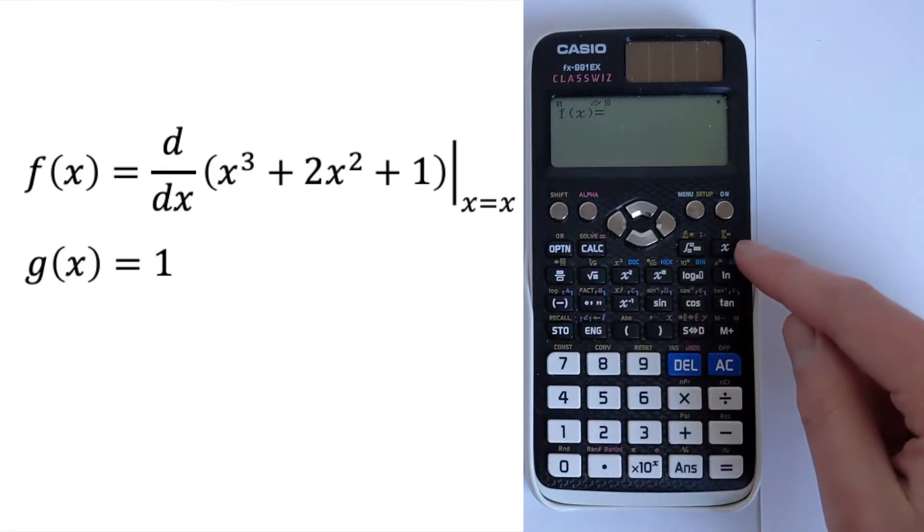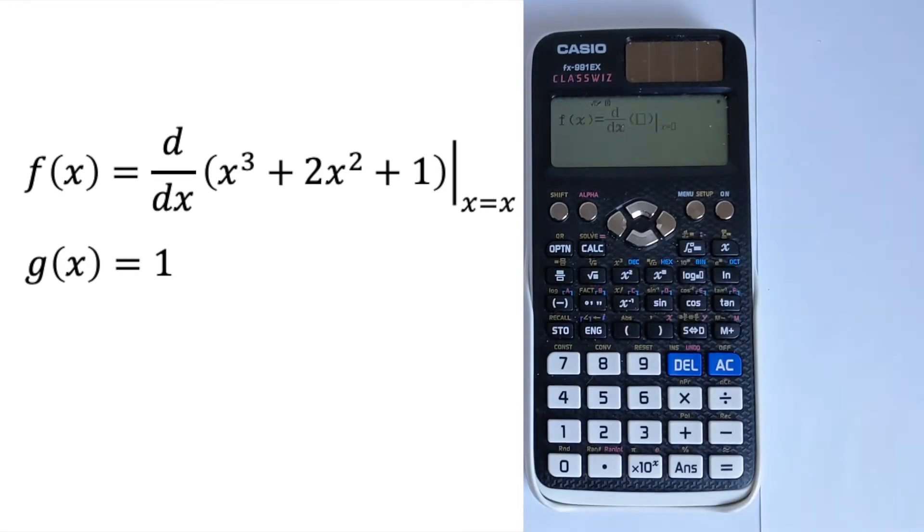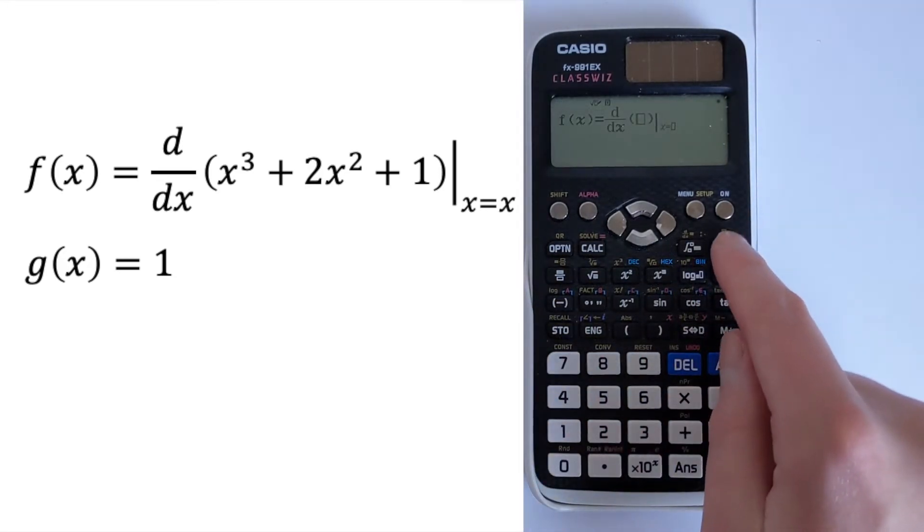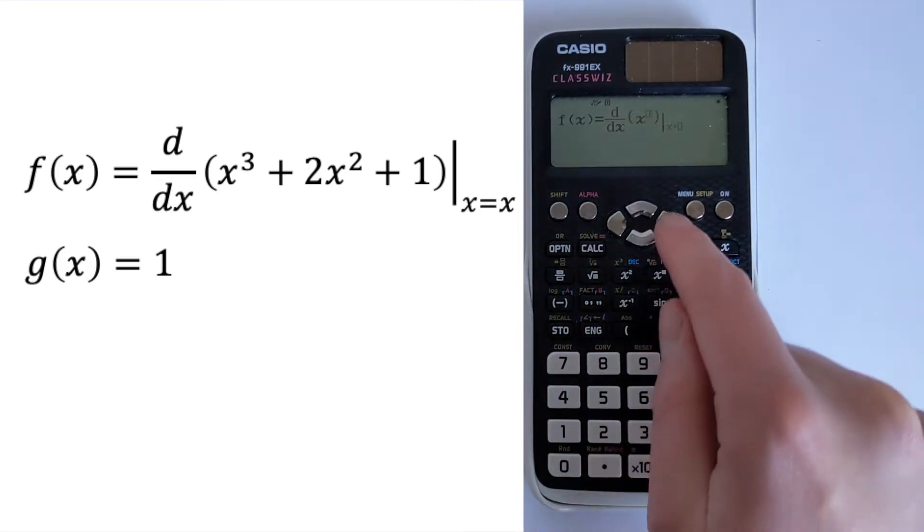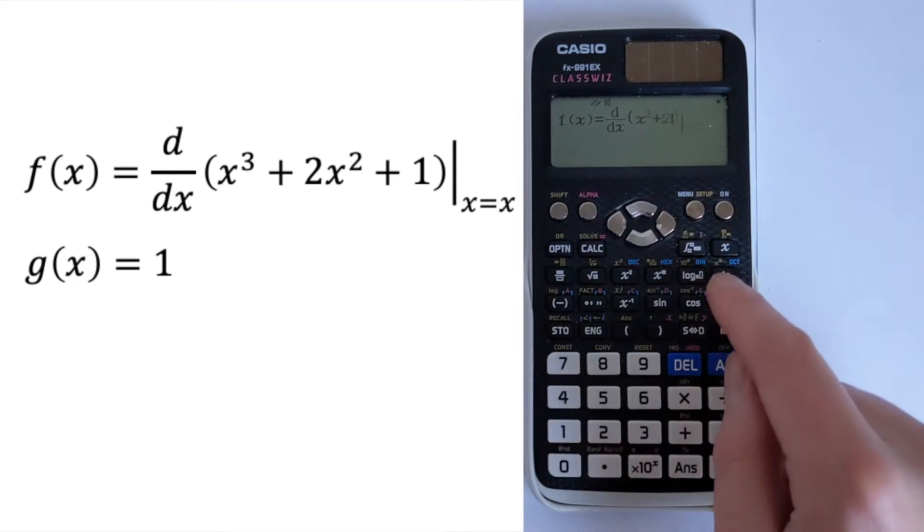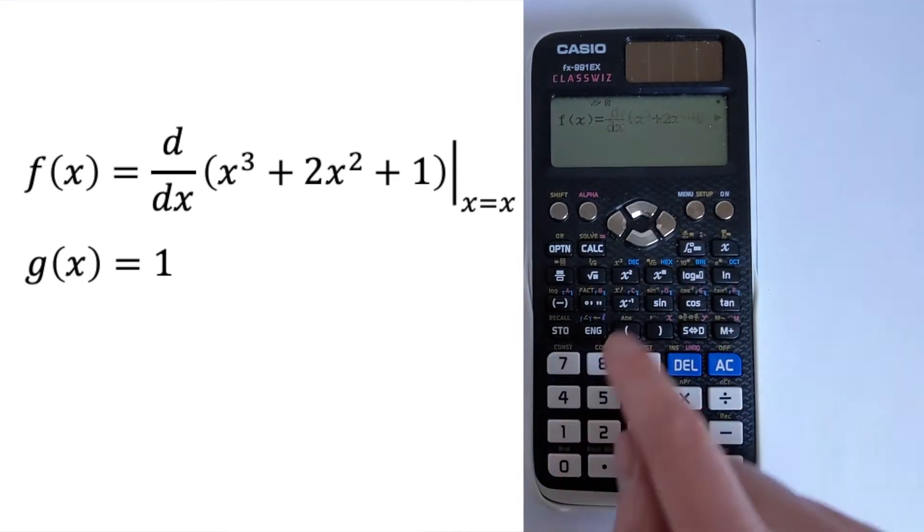So we press shift and then on the integrate button, you've got the derivative. Then we can enter x³, then we want +2x², and then +1.